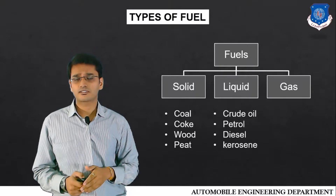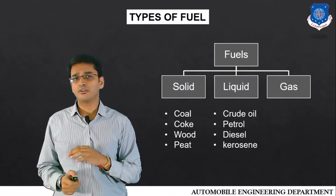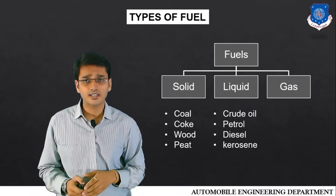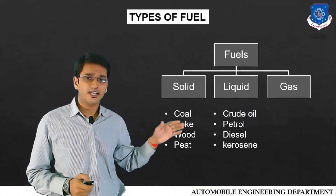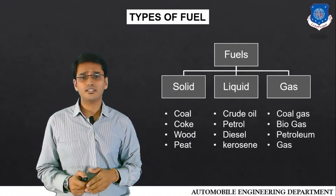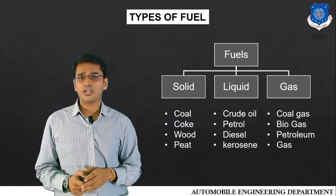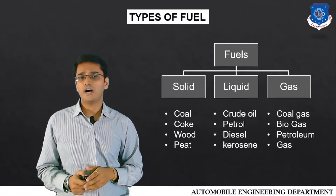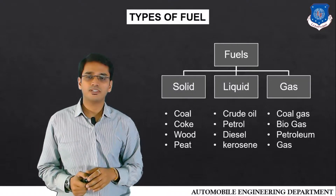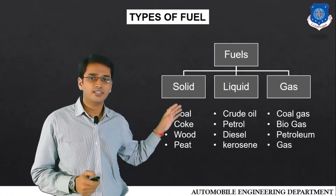For liquid fuels, crude oil is the first and main source. We get crude oil from the earth and need to perform a fractional distillation process, from which we get petrol, diesel, and kerosene. For gaseous fuels, there are examples such as coal gas, biogas, and petroleum, which is also an important source of gases. From petroleum we can get liquified petroleum gas (LPG) and compressed natural gas (CNG) and various other gases.